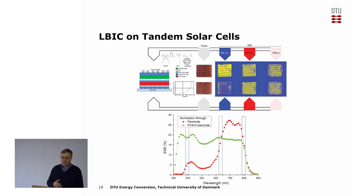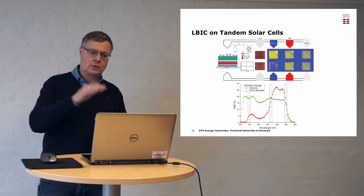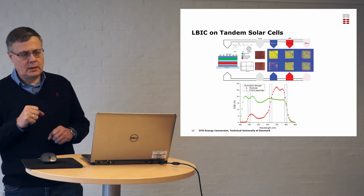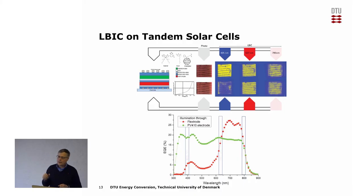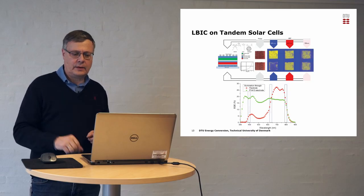We can also image the solar cells using different wavelengths of the laser, which comes in handy for tandem solar cells. In a tandem solar cell, you have two different solar cells — one on top of the other — where one takes part of the solar spectrum and the other takes the remaining part. By using lasers with different wavelengths, you can address the two different subcells and see defects in one subcell versus the other. This allows you to differentiate between defects in different parts of a tandem solar cell.